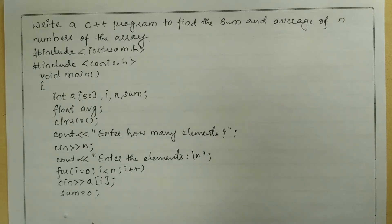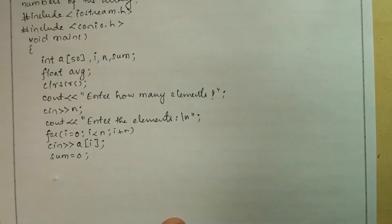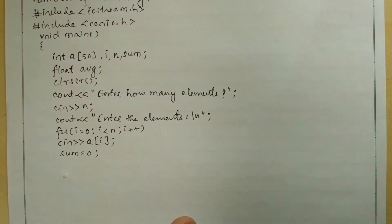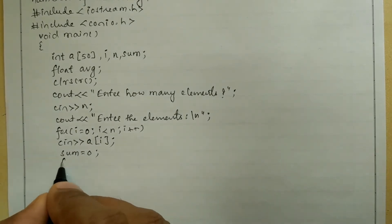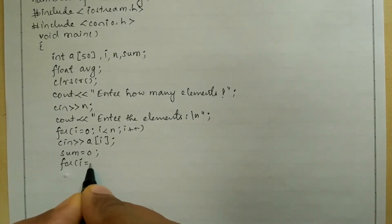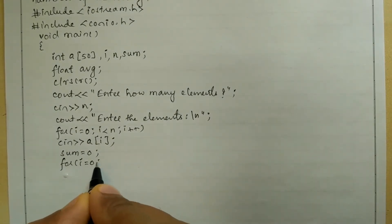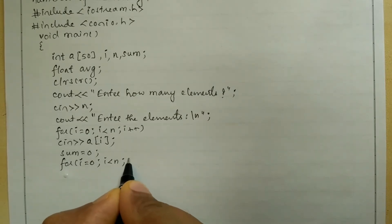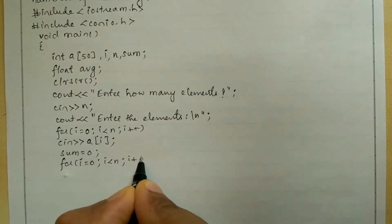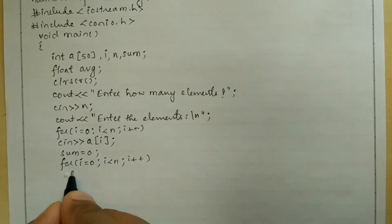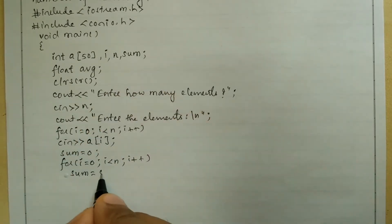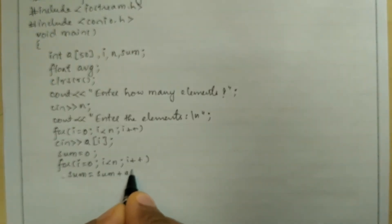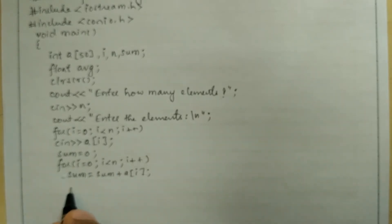Now let us perform the sum operation on each of these elements. For that I have to use a for loop: for i equal to 0, i less than n, then i plus plus. Here I am going to use the statement sum equal to sum plus a of i, and then put semi-colon.